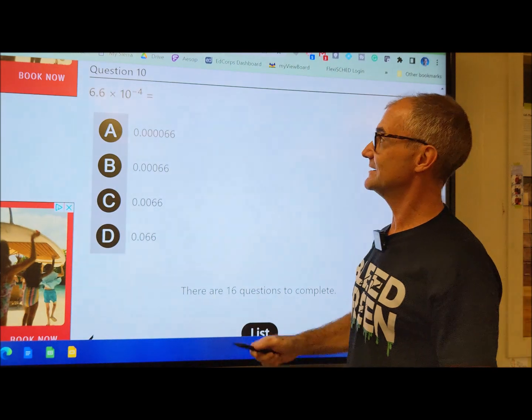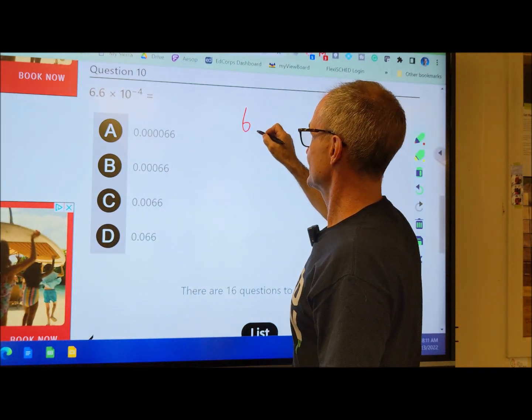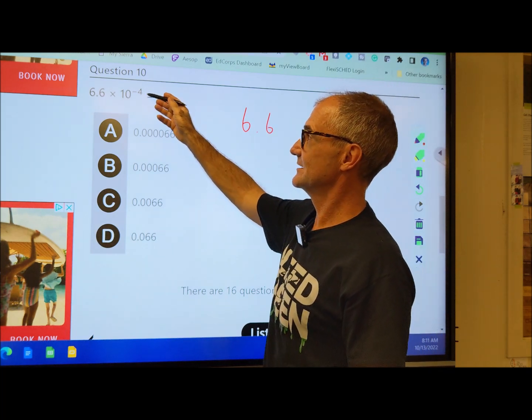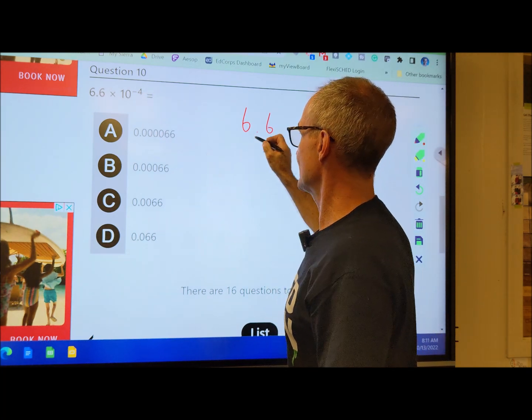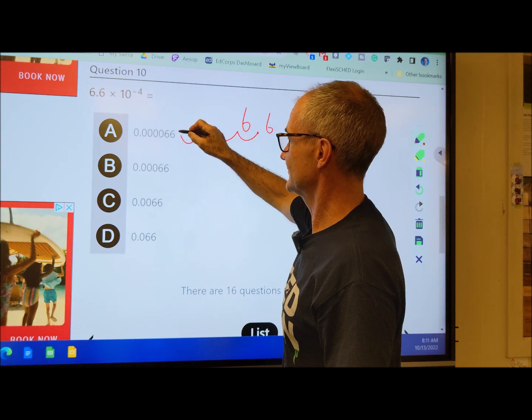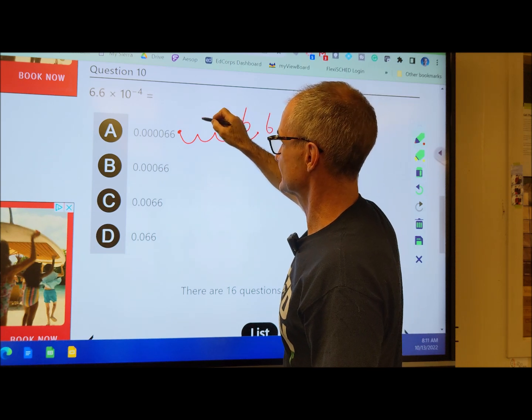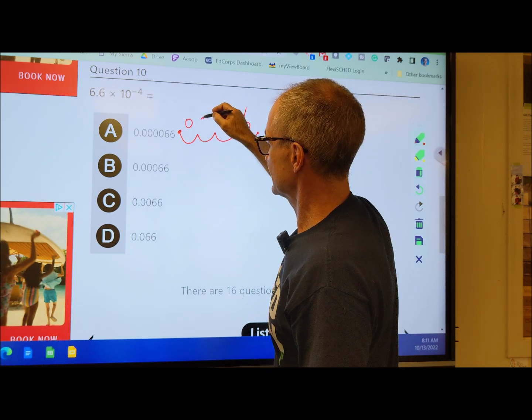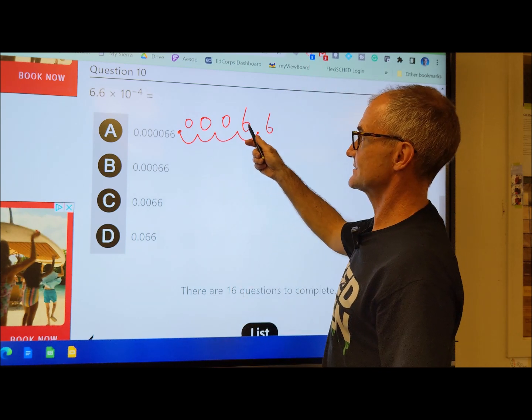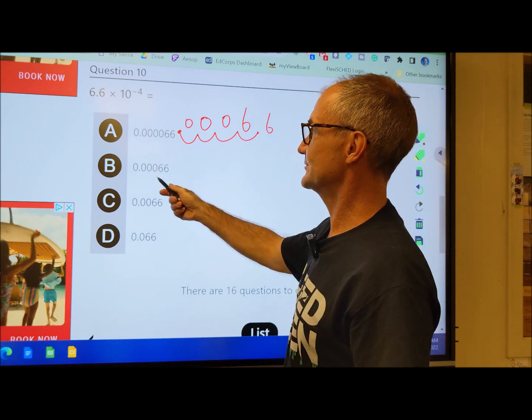Problem 10 is scientific notation. I have 6.6 times 10 to the negative 4th. That means that decimal place is going to go over 1, 2, 3, 4. So there's a decimal place. I'm going to fill this in with zeros. And I could see I have .00066, so three zeros. So it's answer B.